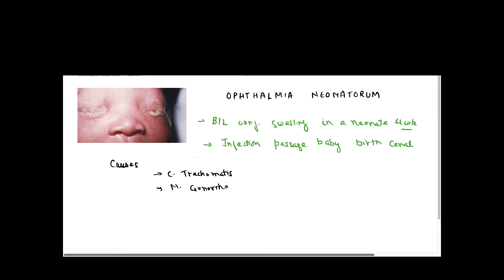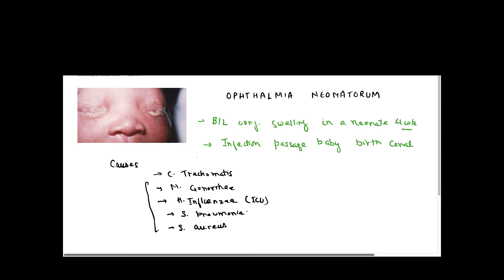Other causes include Neisseria gonorrhoeae, which can be very disastrous for the child — as discussed when covering hyperacute bacterial conjunctivitis. Then there is Haemophilus influenzae, particularly important in children admitted to the ICU, followed by Streptococcus pneumoniae and Staphylococcus aureus.